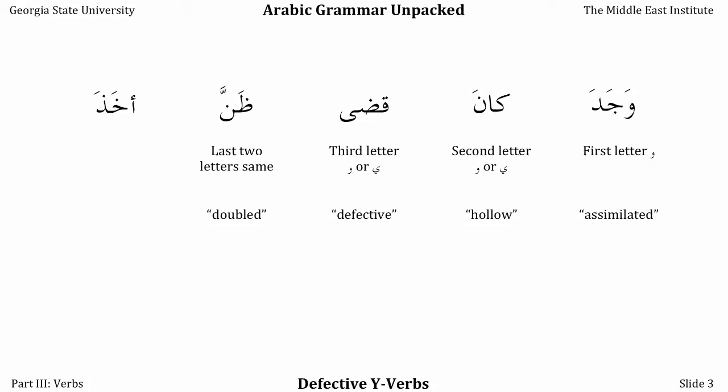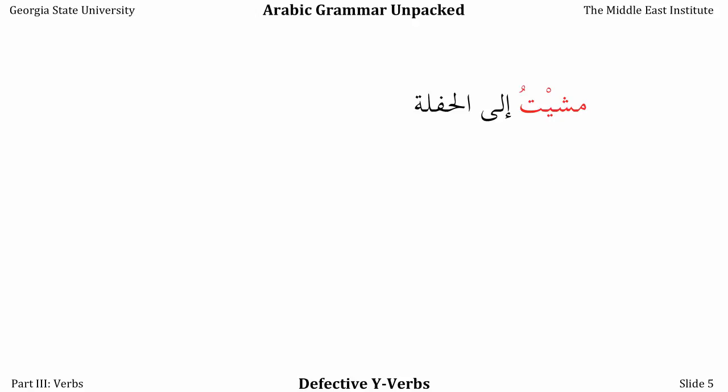Today we will be discussing defective verbs, specifically those that use YA as their last letter. But there's something a little trickier with these verbs because there are really two kinds of them. We have the verb 'to walk,' masha yamshi. We say, mashaitu ila al-hafla — I walked to the party. Amshi ila al-jaami'a fissabah — I walk to the university in the morning.